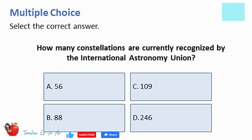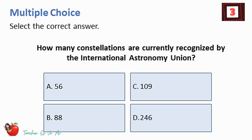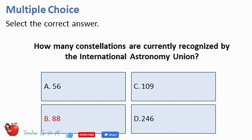Multiple choice, select the correct answer. How many constellations are currently recognized by the International Astronomy Union? A. 56. B. 88. C. 109. D. 246. The correct answer is B — 88.